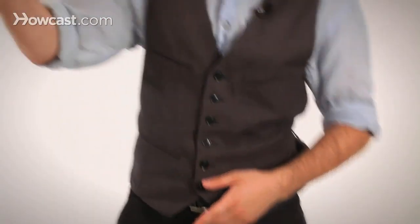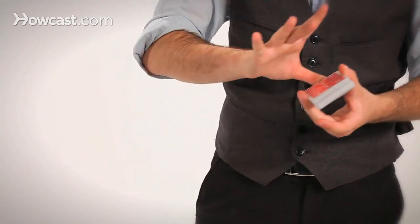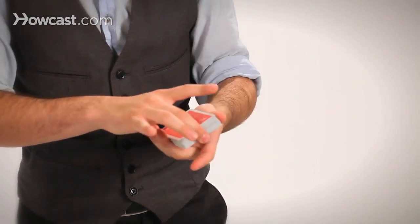Basically what happens is you start with your thumb right there on the back of the deck, closer side to you. You start with your middle finger right there on the outer side of the deck.